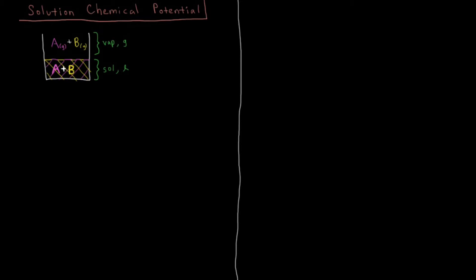In this video we're going to continue discussing chemical potential within solutions and look at it for the solution and the vapor which exists above this solution. We have our solution here again with two components A and B. Both were liquids at room temperature, mixed together to form a liquid solution. Each component evaporates particles from the surface until the vapor pressure at that temperature and pressure is reached, giving an equilibrium amount of vapor of each A and B molecules. That gives vapor pressures P_A and P_B above the solution.